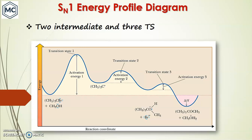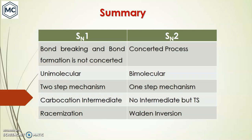The energy profile diagram for SN1 shows two transition states and two intermediates. The starting material is tertiary alkyl halide with methanol. Slow ionization occurs via the first transition state to form the carbocation intermediate. Then nucleophilic attack takes place via a second transition state to form the oxonium intermediate, which finally loses a proton through a third transition state to give the product.